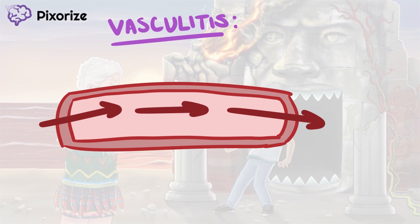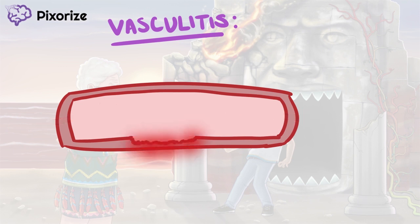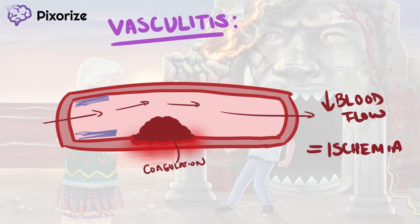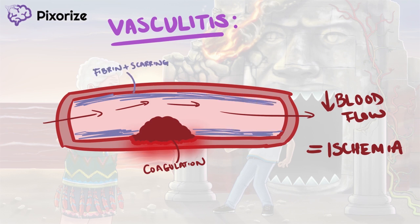Damage to endothelial cells exposes subendothelial collagen and tissue factor, which promotes coagulation. This leads to clot formation, which can block the vessel and lead to ischemia. Chronic fibrin deposition and scarring over time can also decrease the diameter of the vessel lumen, further contributing to ischemia. This relationship between vasculitis and ischemia is an important one, so be sure to keep it in mind.